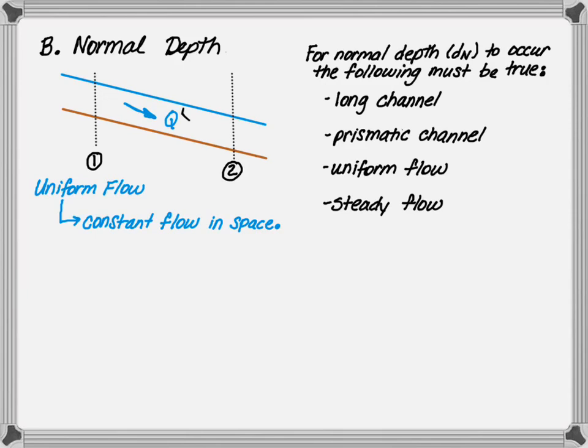Second, the channel must be prismatic. This means that the overall geometry of the channel is constant, with no natural changes. Ideally, we think of a rectangle, a triangular, or a trapezoidal, or circular cross section.